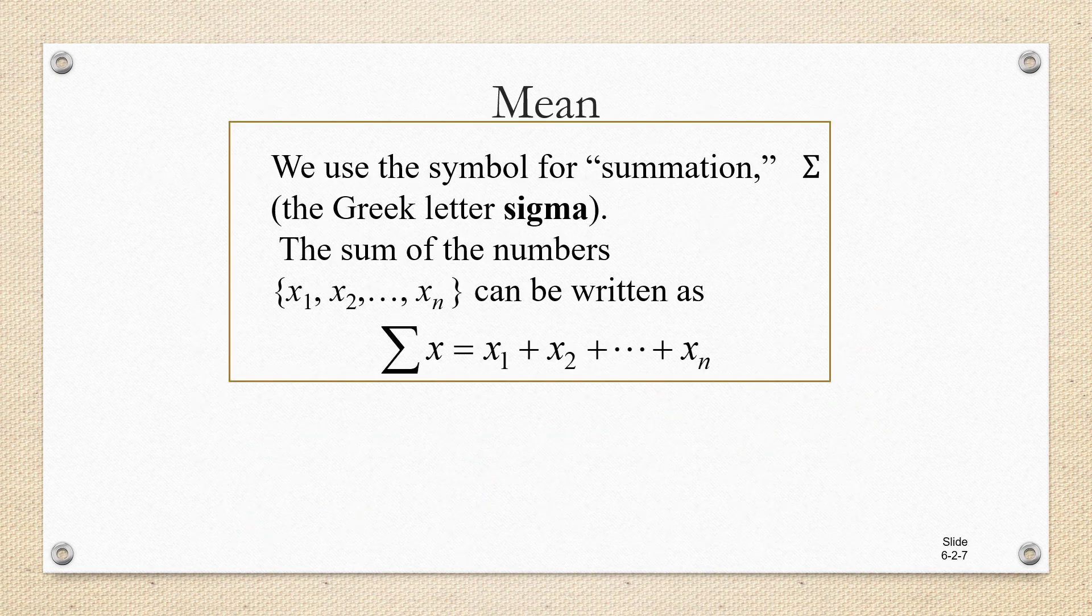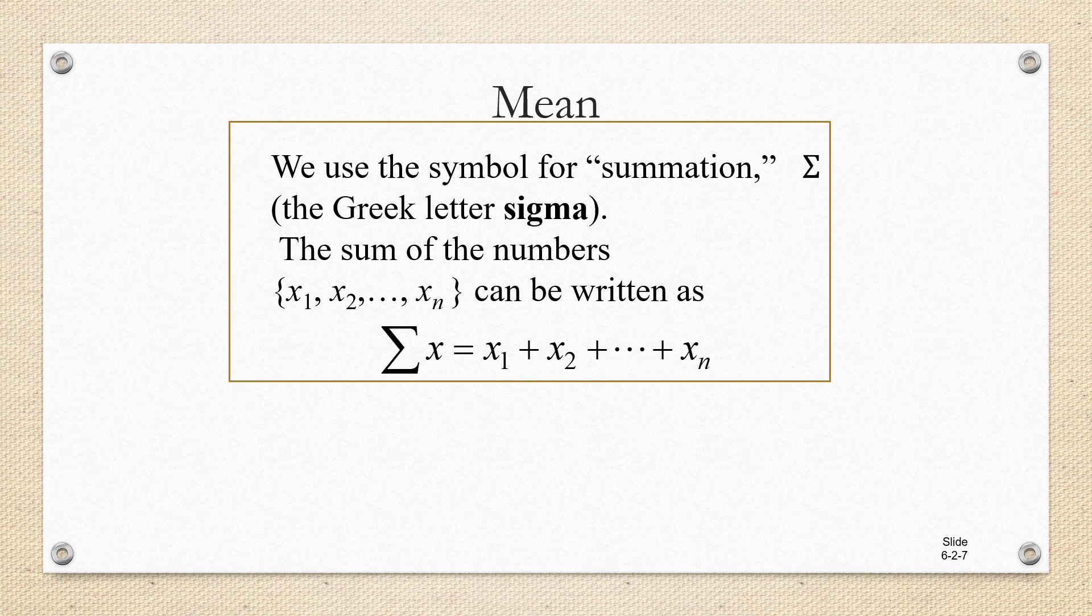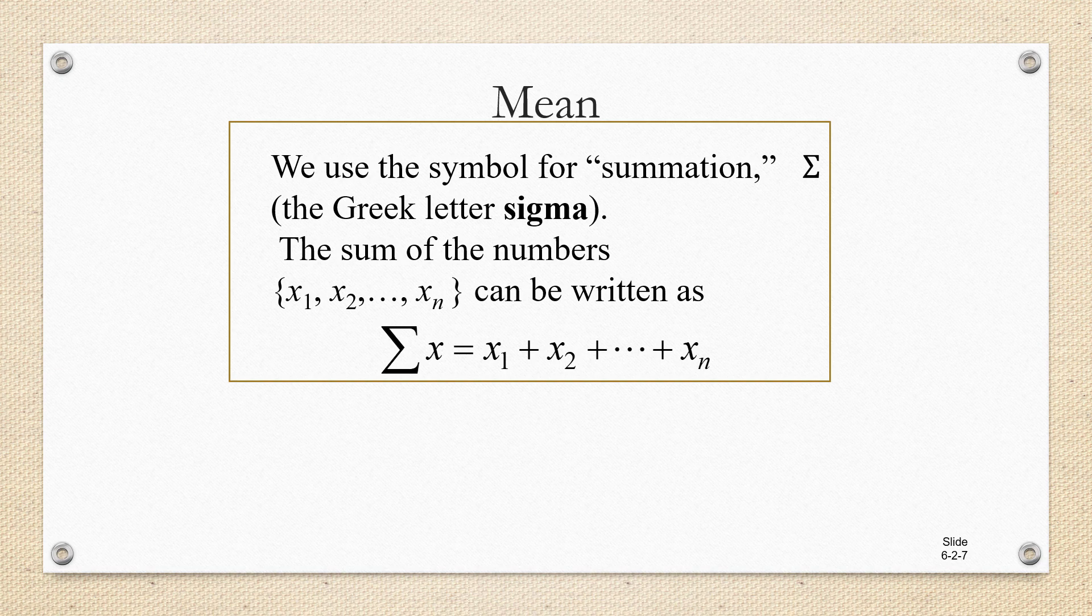Now sometimes in statistics we use various symbols to tell us to perform operations. One of those symbols is the Greek letter capital Sigma. It's kind of a wicked-looking E. So if you put Sigma in front of X and X is the symbol for our data values, then what that's telling you to do is to add up all of your data values. This is going to help us to write the statistics formula for the mean.